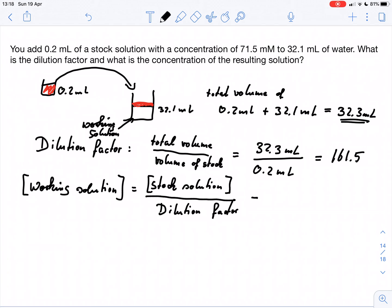So we have a stock solution of 71.5 millimolar, that's what our stock solution was, and we have a dilution factor of 161.5 by which we dilute it.